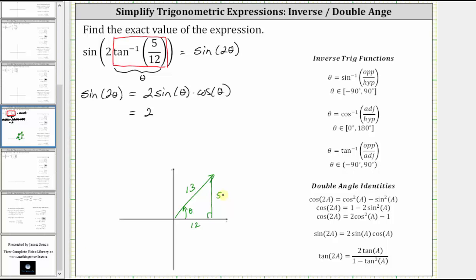Sine theta is equal to the ratio of the opposite side to the hypotenuse, which gives us five thirteenths. And cosine theta is equal to the ratio of the adjacent side to the hypotenuse, which gives us twelve thirteenths.